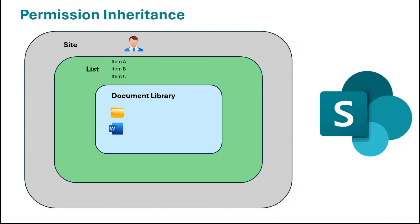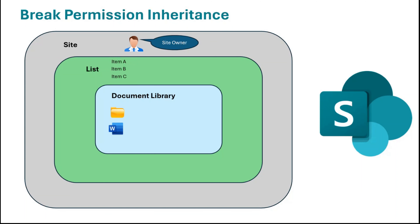The permissions defined at the site level are used by the lists and document libraries of that SharePoint site. But in SharePoint, we can break this inheritance. For example, if a user is part of the site owners group and has owner permission on the complete site, but you want to give him view-only permission on the document libraries, you will break the permission inheritance between the site and the document library and use unique permissions on the document library. This way the user will have owner permission on the site and list, but view-only permission on the document library.